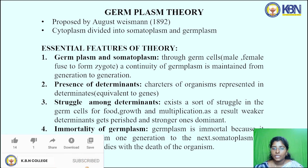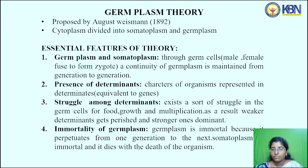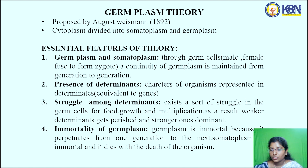Essential features: organisms' characters are represented in determinants, which are equivalent to genes. A struggle among determinants exists in germ cells for food, growth, and multiplication; as a result, weaker determinants perish and stronger ones dominate. Regarding immortality of germplasm: germplasm is immortal because it perpetuates from one generation to the next, but somatoplasm is mortal and dies with the death of the organism.